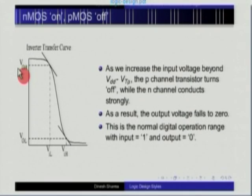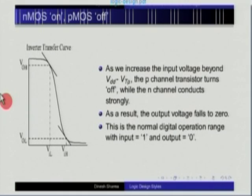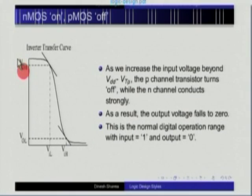We must ensure that V_output_high is sufficiently higher than V_input_high so there is no confusion even in the presence of noise. Similarly, V_output_low must be sufficiently lower than V_input_low, so that even in the presence of noise the output low is never considered high. The amount by which this is true is called the noise margin of that technology.